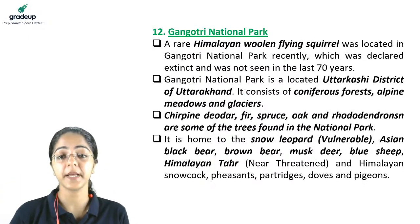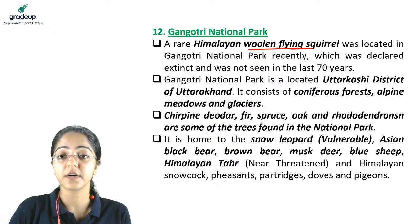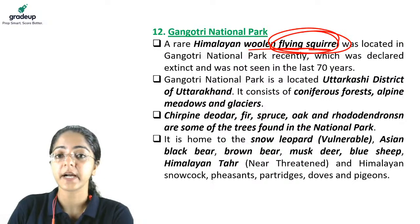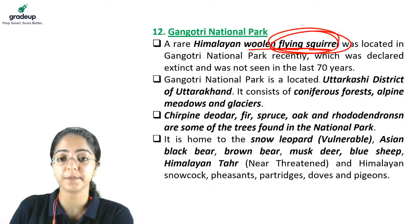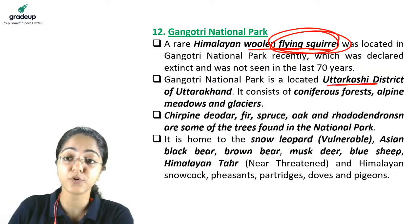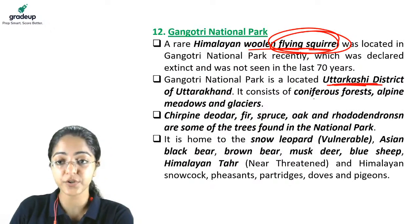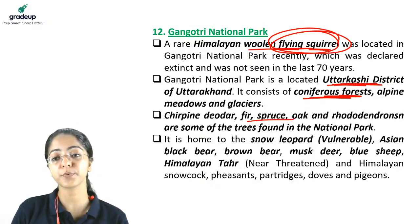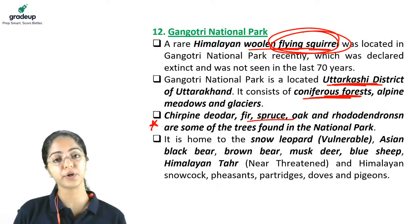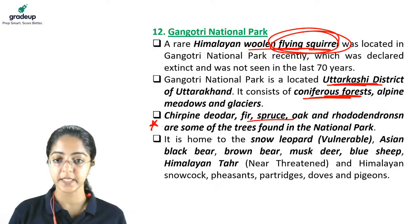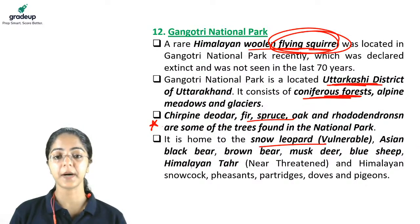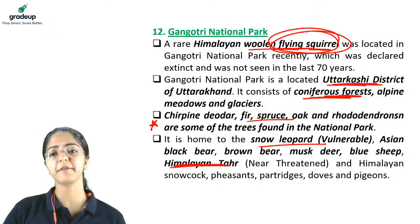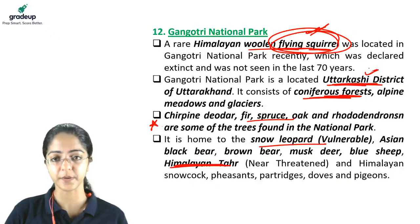Gangotri National Park is located in Uttarkashi district of Uttarakhand. A rare Himalayan woolly flying squirrel is found here. The vegetation includes coniferous forests, alpine meadows, and glaciers — with chair pine, firs, spruce, and similar species. It is home to snow leopard and Himalayan tahr as well. The most important facts to remember are the flying squirrel and Uttarkashi district.